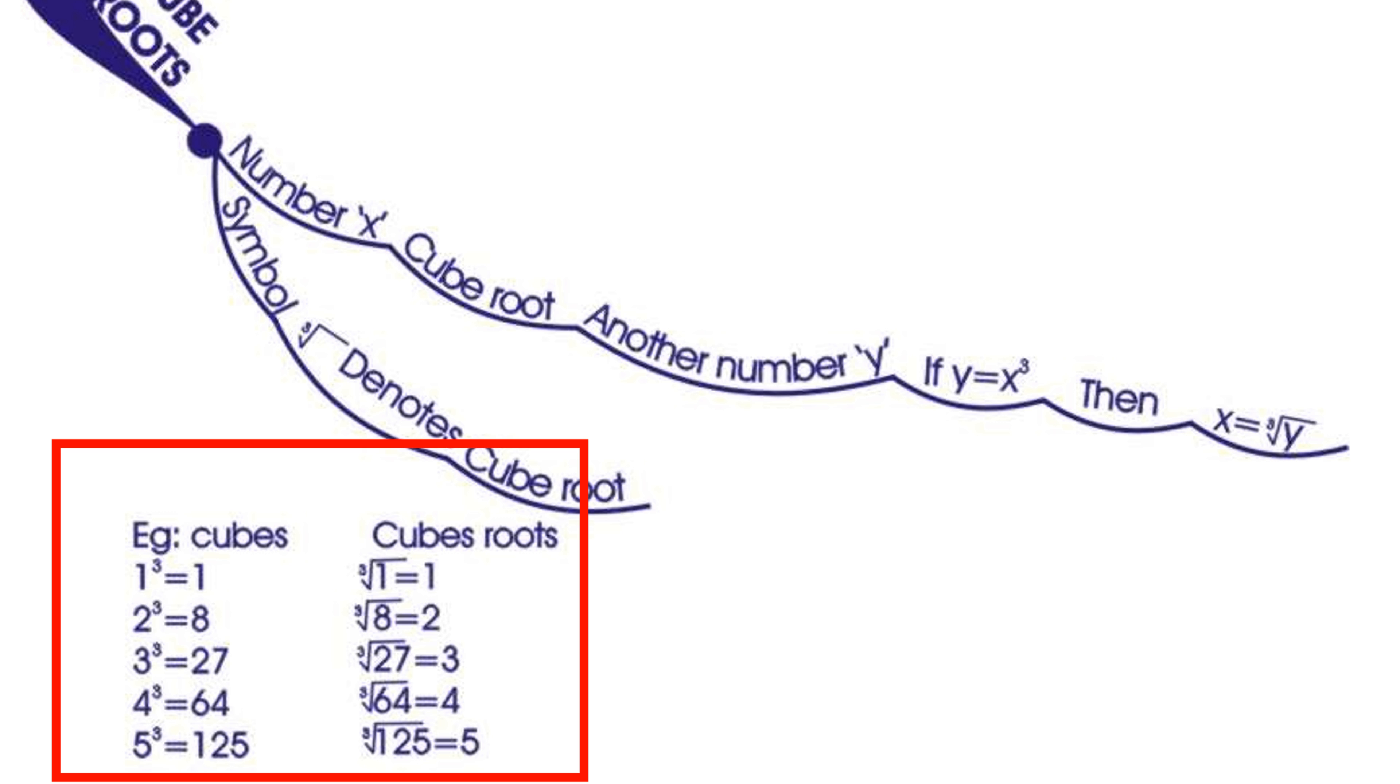3 cube equals 27. Cube root of 27 equals 3. 4 cube equals 64. Cube root of 64 equals 4. 5 cube equals 125. Cube root of 125 equals 5. In this way it will follow.